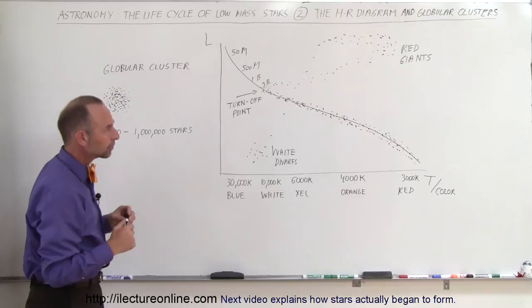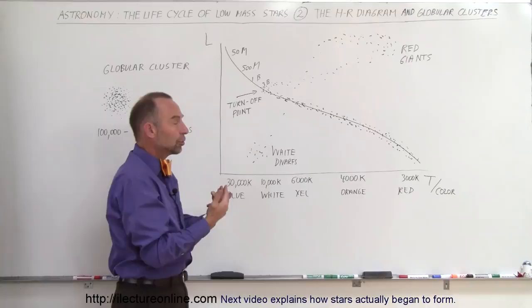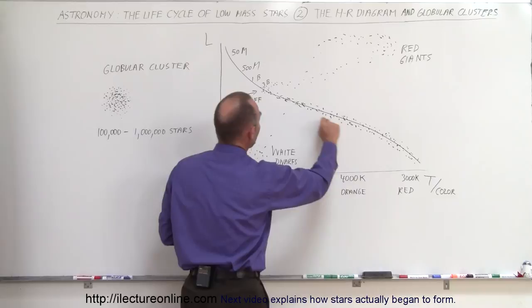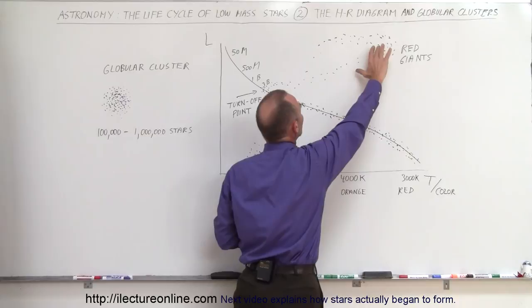By looking at this, we began to see that the HR diagram, when you take all the stars from a globular cluster and put them on an HR diagram, would actually tell you the life cycle of a star. You could see that stars would stay on the main sequence for a long time. After so many years, depending upon how big they were, they would turn themselves into red giants. Then you could see they would change, reaching the red giant stage, then there would be a stage in which they would change, and finally they would end up as white dwarfs.